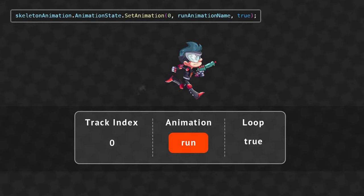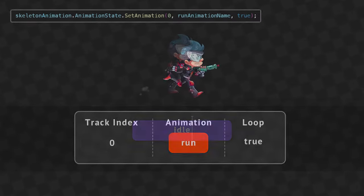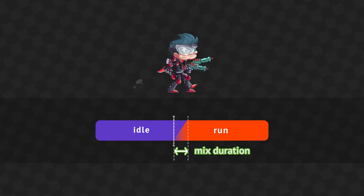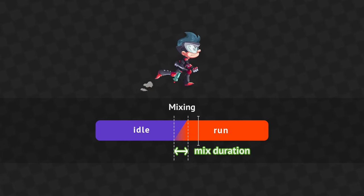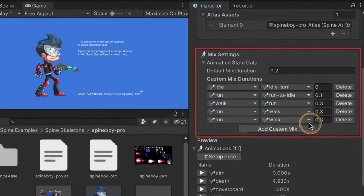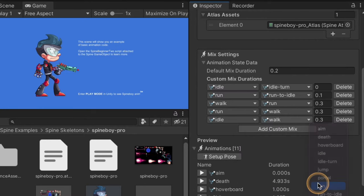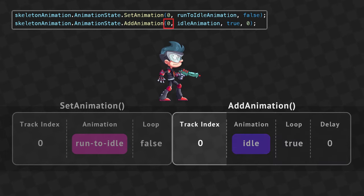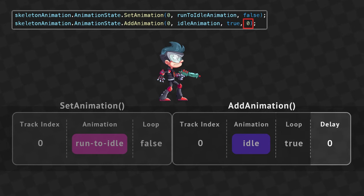SetAnimation replaces any animation already playing or queued on that track. When a track changes from one animation to another, the mix duration determines how much time is used to crossfade between animations — this is called mixing, and helps avoid abrupt changes. You can set the mix duration between pairs of animations in the mix settings of the Skeleton Data Asset. The default mix duration is used for any animation pairs that don't have a mix duration set explicitly. AddAnimation queues an animation to play after other animations, taking a track index, animation, loop boolean, and a delay that determines when the queued animation replaces the current one.